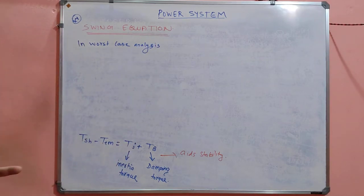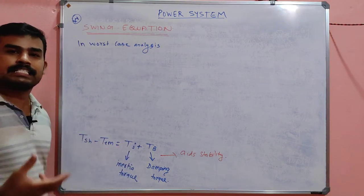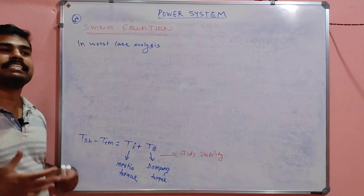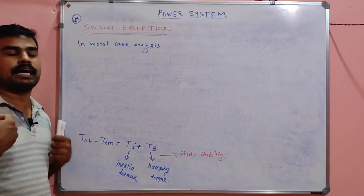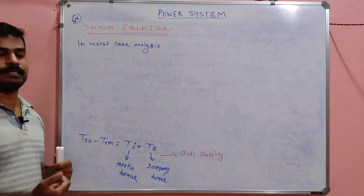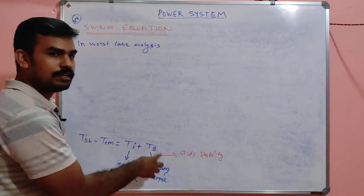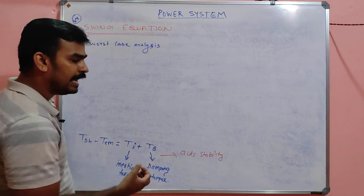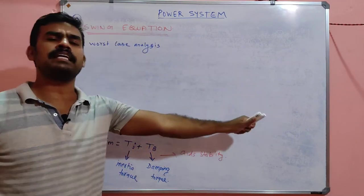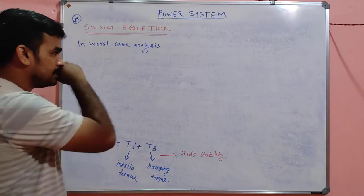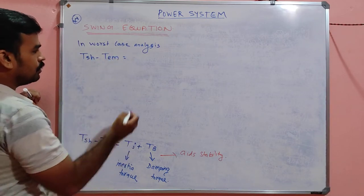In worst case analysis, we analyze the system without any helping factor for stability — that is, we omit the damping torque, since it is the aiding factor for stability. Worst case means no helping factor; we are on our own. So in worst case analysis, the relationship becomes TSH minus TEM equal to only TJ.